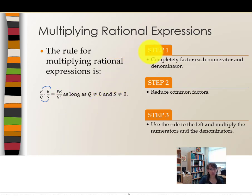Basically, the steps are: Number one, completely factor each numerator and denominator. From there, notice any common factors that need to be reduced. Step three, use the rule to multiply the numerators and denominators that remain. So the first step actually is not multiplying, it is factoring, then reducing, and then multiply anything that remains.